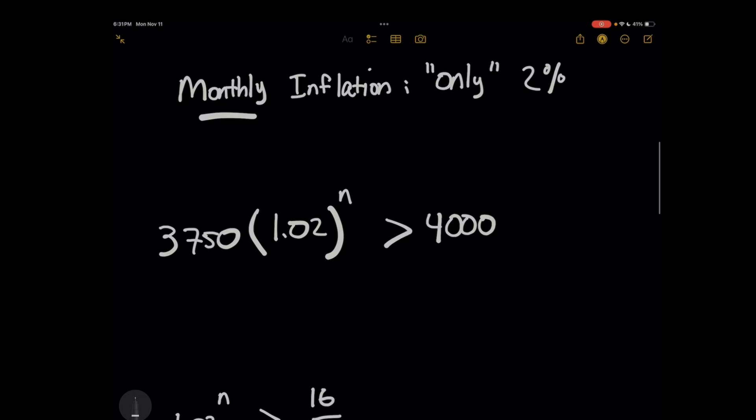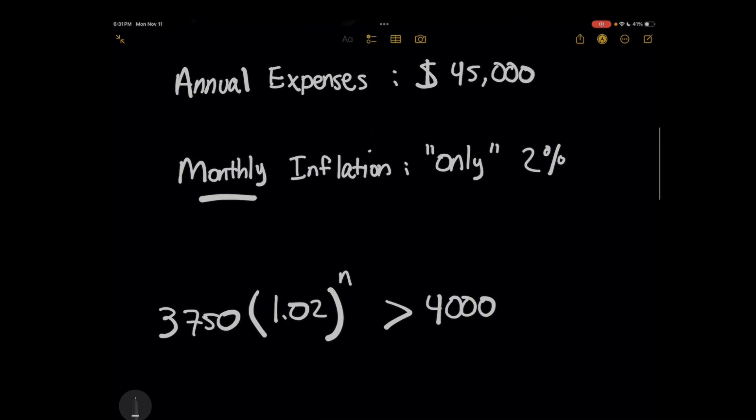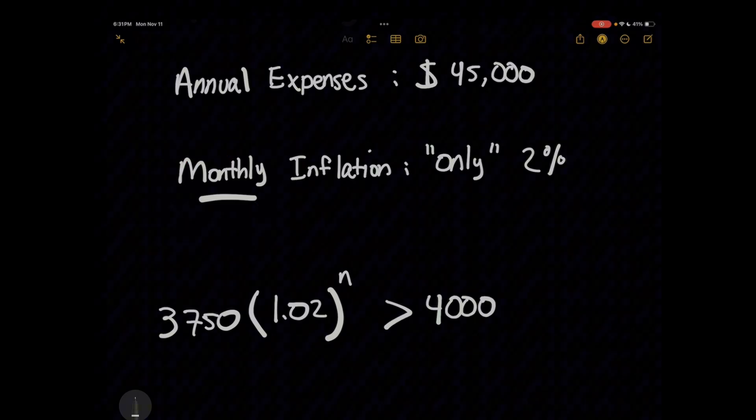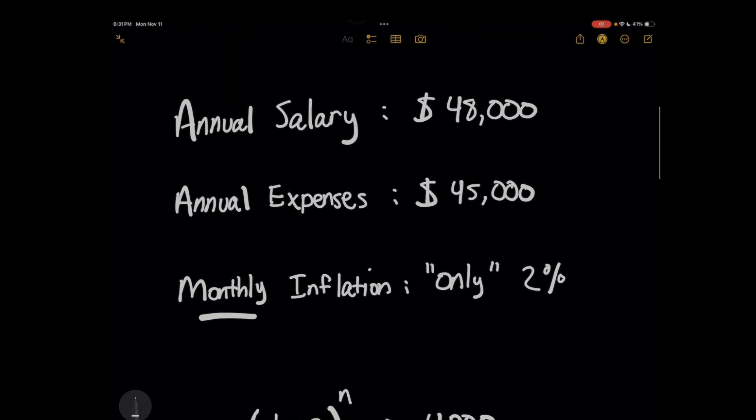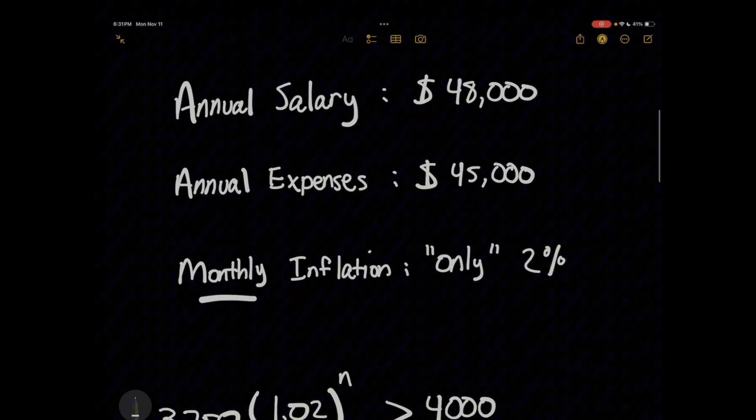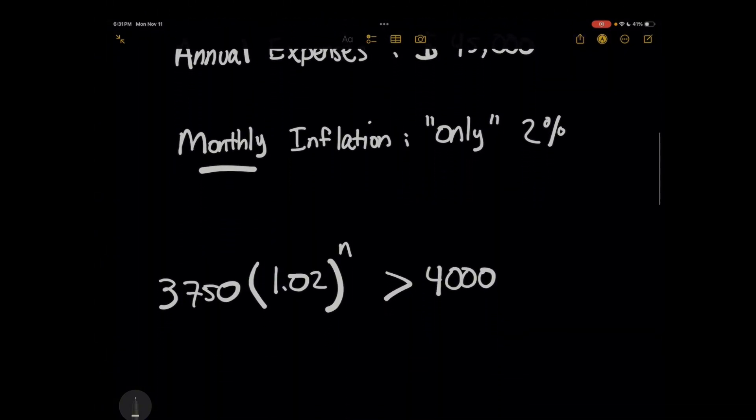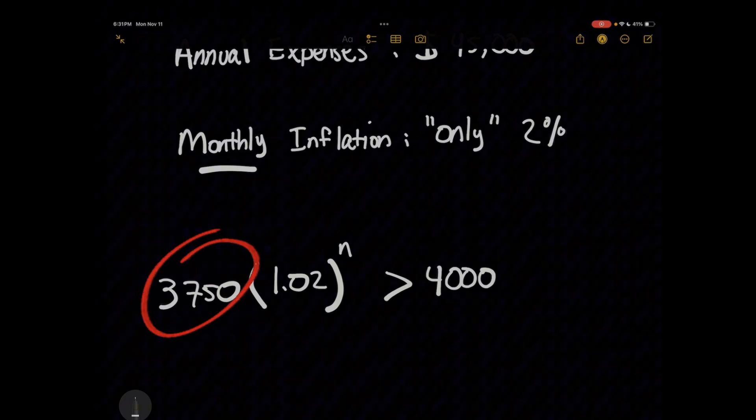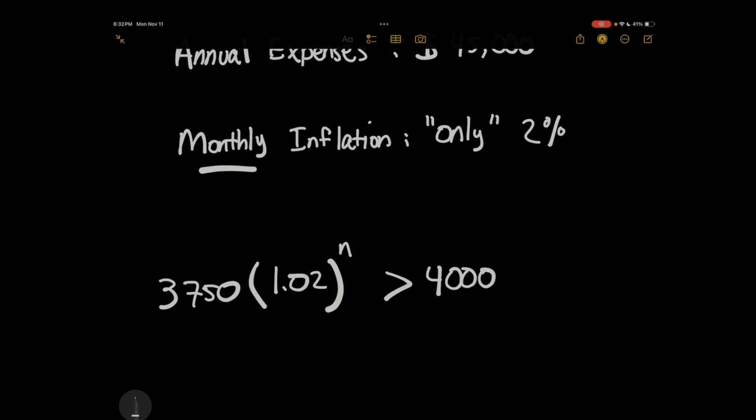For this expression here, the way I got this is $3,750 is going to represent how much I spend per month. Since we're dealing with a monthly compounding formula here, where it's monthly compounding at 2%, what I want to do is I want to take my annual expenses and salary and divide them both out by 12. So that gives me $3,750 for how much I spend each month and $4,000 for how much I make.